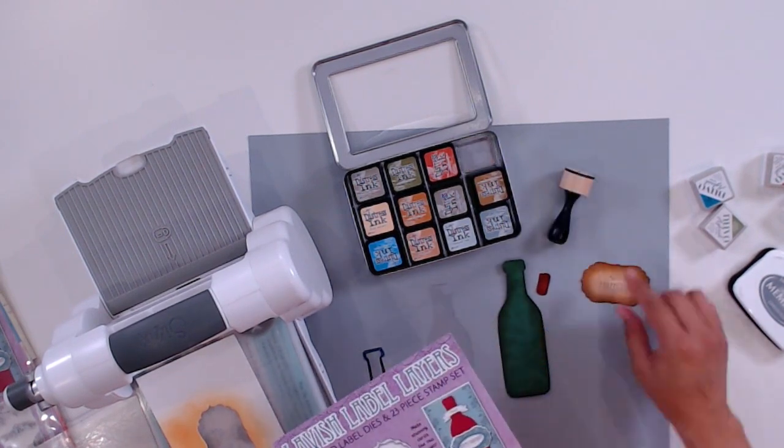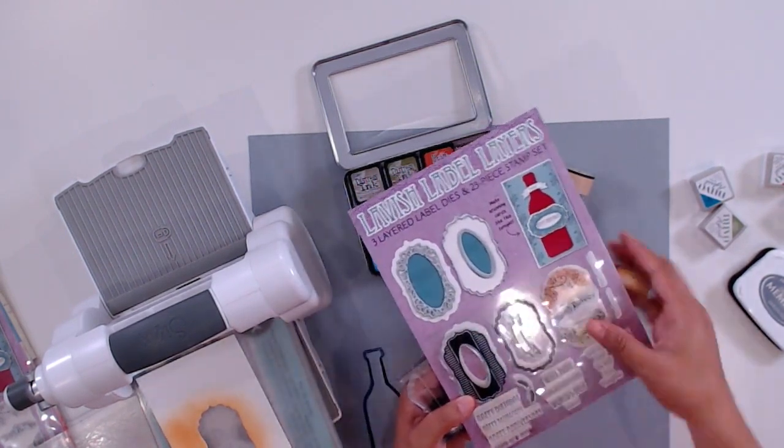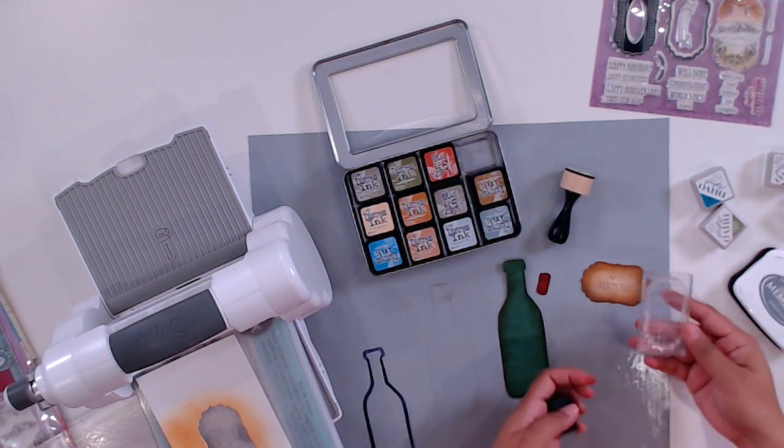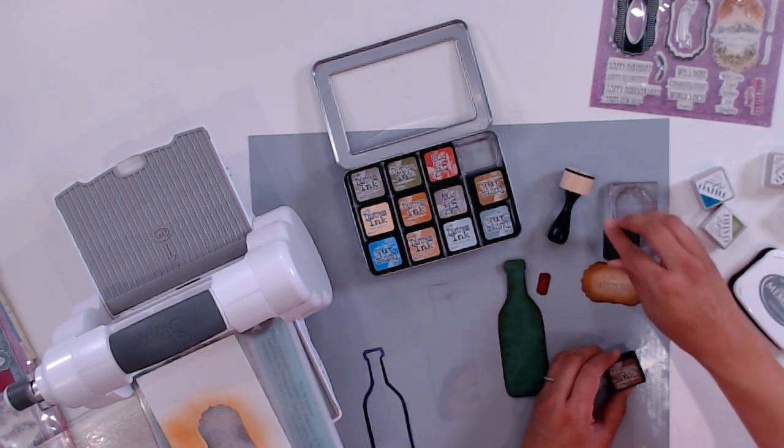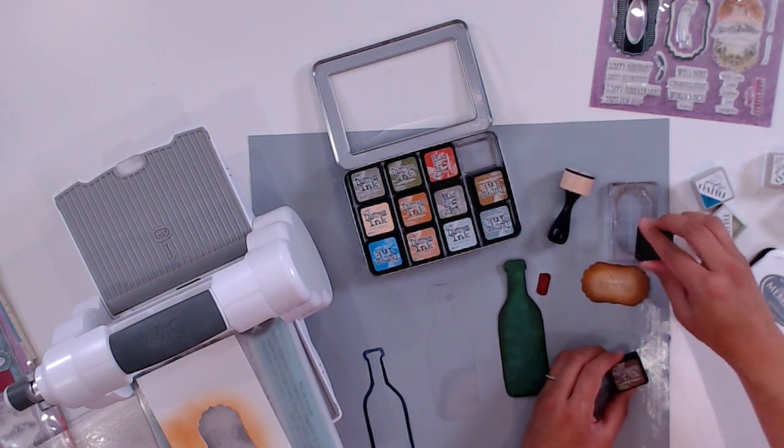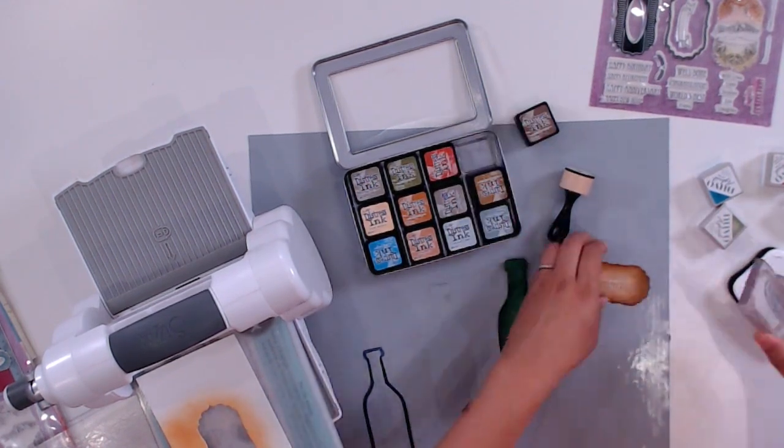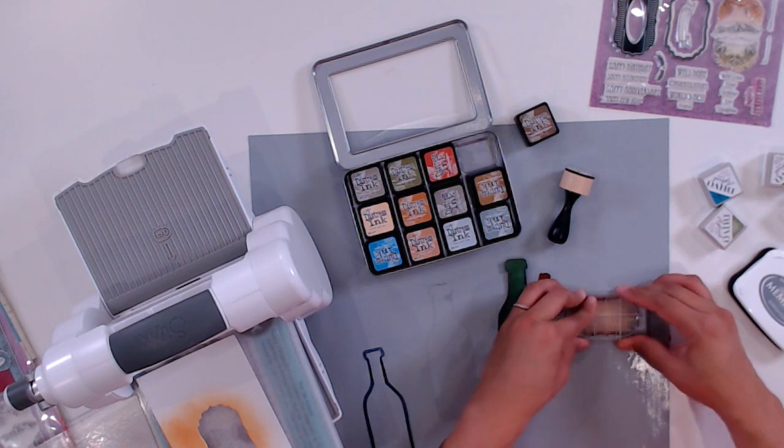I'm going to do one more stamp on this vintage label. I'm going to use this outline stamp here. I feel like it adds a little bit more interest to my card. I've mounted my stamp and for the ink, I'm going to be using Gathered Twigs.